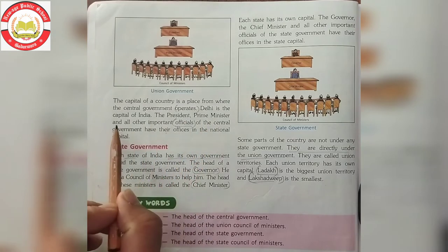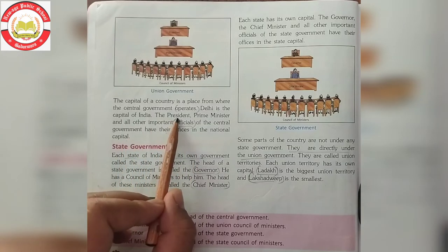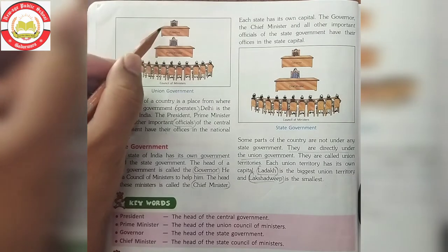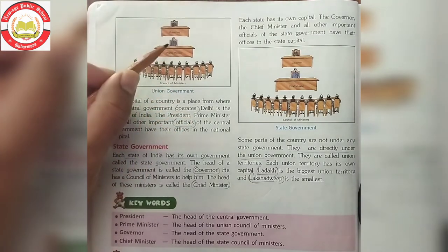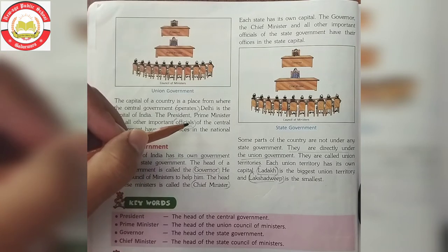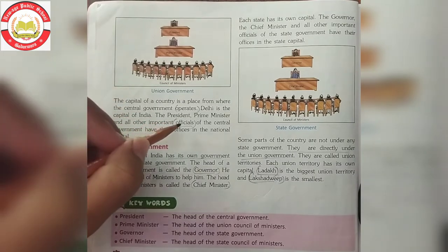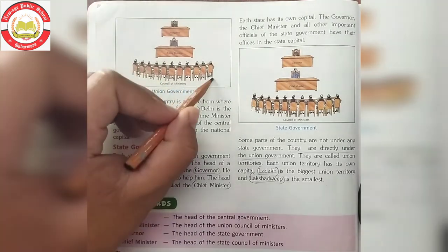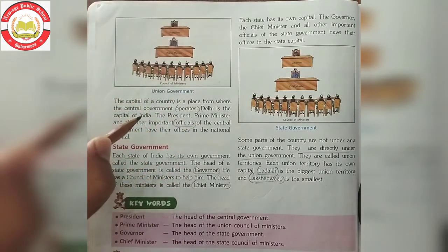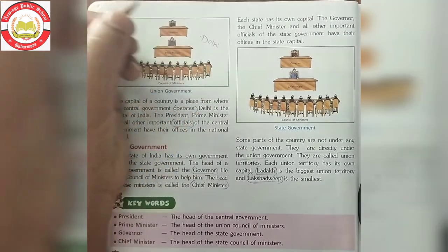The President, Prime Minister, and all other important officials of the central government have their offices in the national capital. President head hota hai central government ka, then Prime Minister, and all other important officials — 'officials' ka matlab hai adhikari — jo council of ministers hain ya other important persons hain government mein. Saare offices inke hamare national capital Delhi mein rahenge.